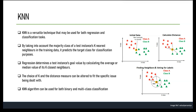The choice of K can affect the performance of the algorithm. A low value of K can lead to overfitting while a high value can lead to underfitting. The distance metric used to calculate the distance between the test instance and training instances is also important and can have a significant impact on performance.